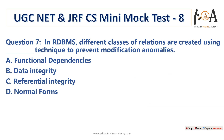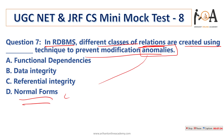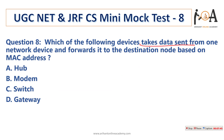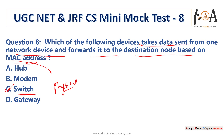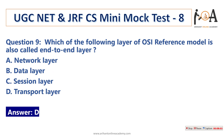Question number 7: in RDBMS, different classes of relations are created using which technique to prevent modification anomalies? Whenever you see the keyword 'anomalies,' you can immediately derive that normal forms are in the picture, because normal form techniques help us prevent modification anomalies. So option D — normalization — is directly the answer.